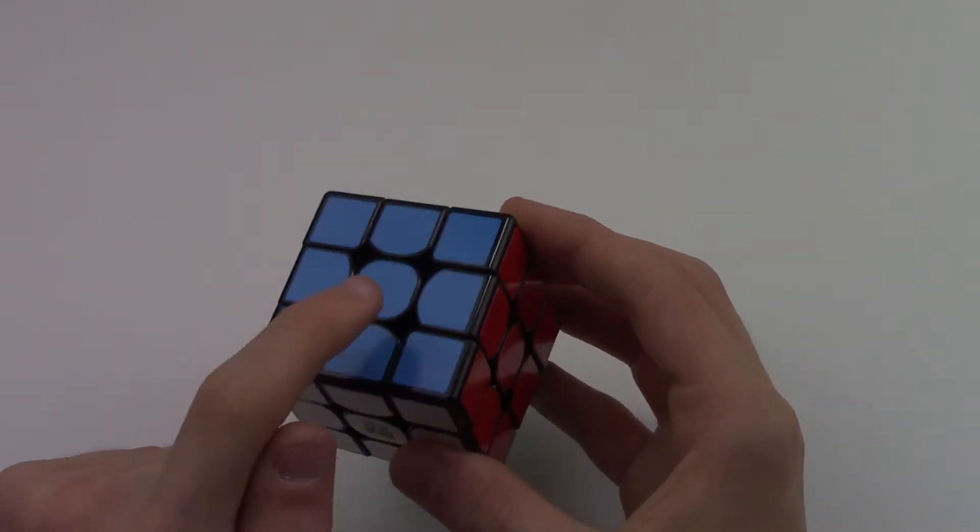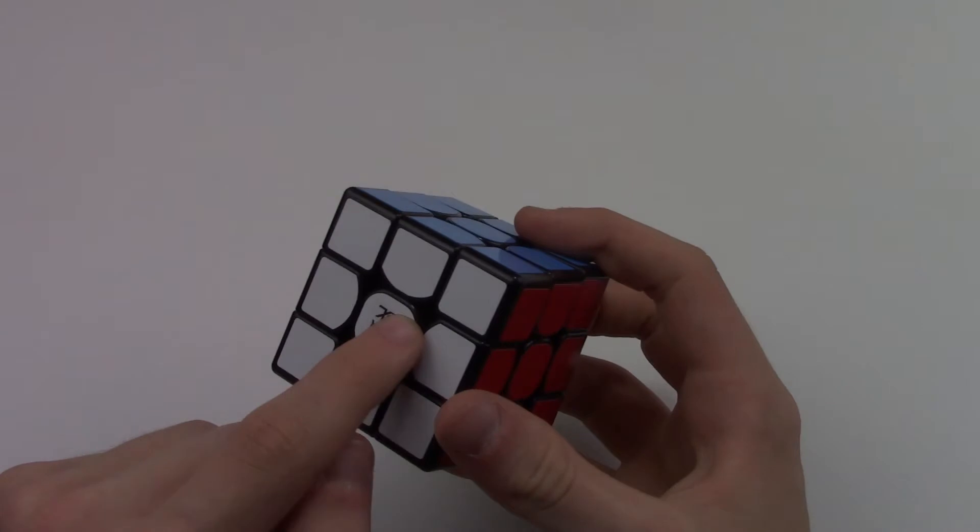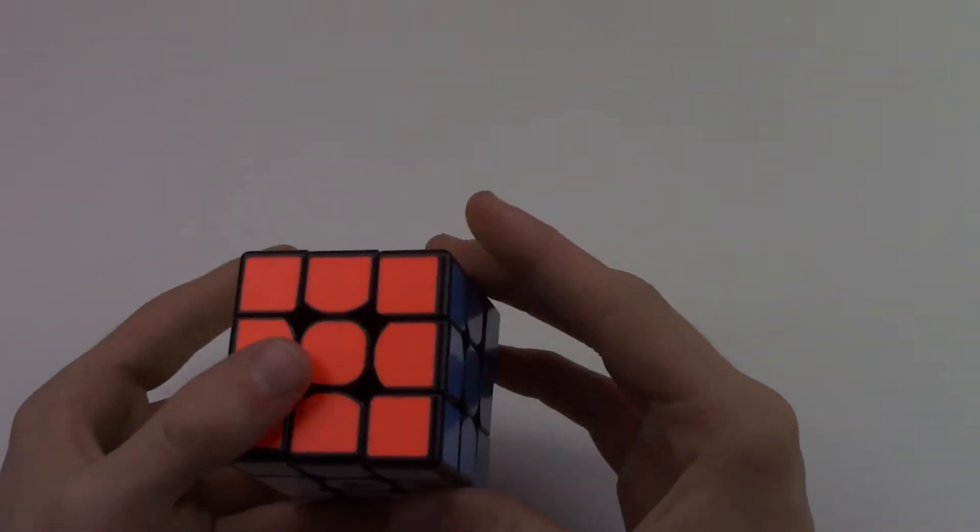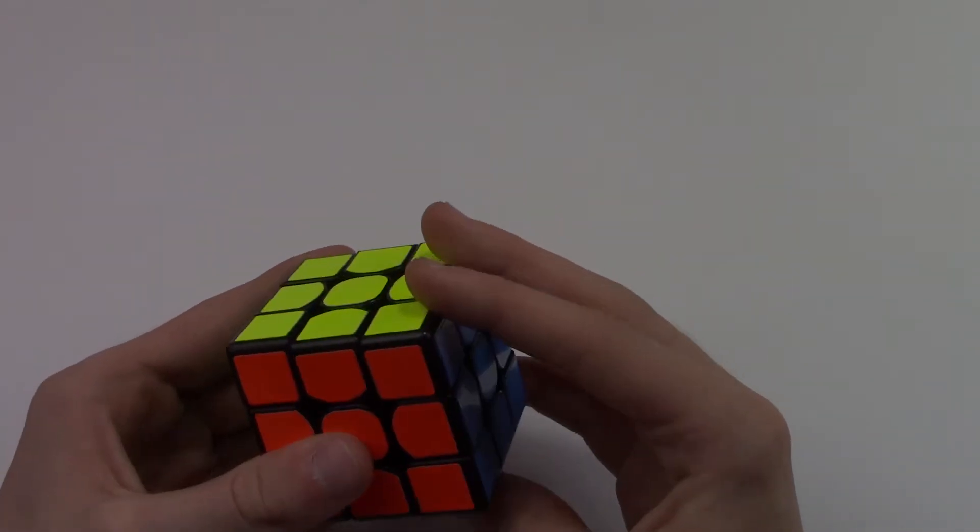So, edges, corners, and centers, I'm going to be solving on white cross. You guys can solve it on any cross you want, it's just I learned on white, so that's what I'm going to do. So I'm going to go ahead and scramble up the cube, and we'll be right back.